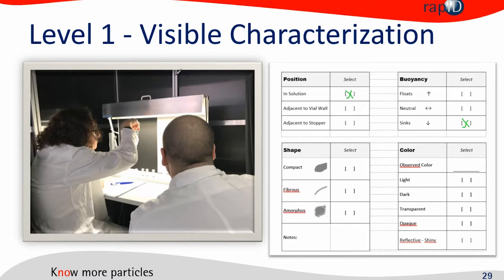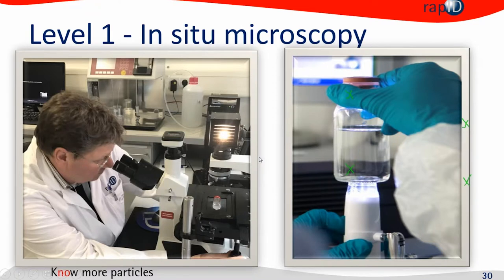With additional tools like an inverted microscope, you can observe shape and color — you might even be able to say it's a glass suspect or something else. That's the basic level one visible characterization, and you need about one to five minutes to fill out the worksheet and locate the particles with proper training. For more sophisticated work, you can use an inverted microscope and I will have a few examples.